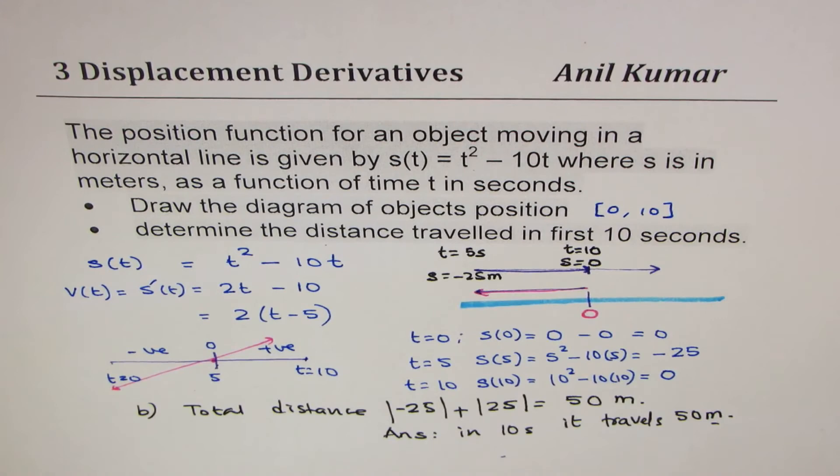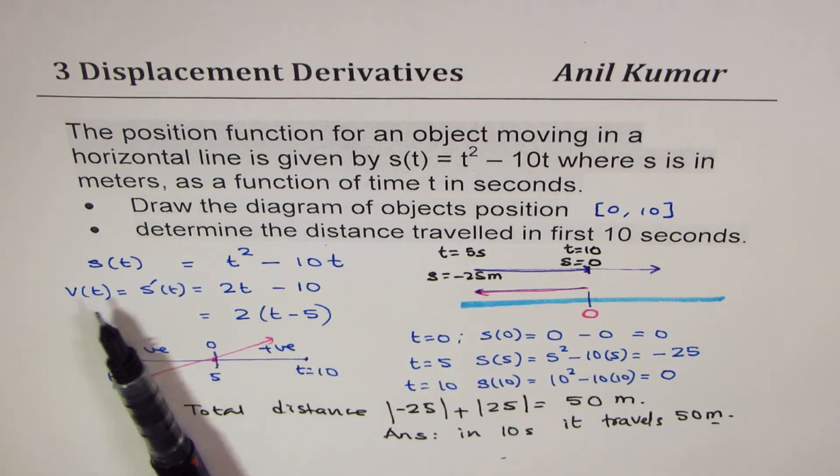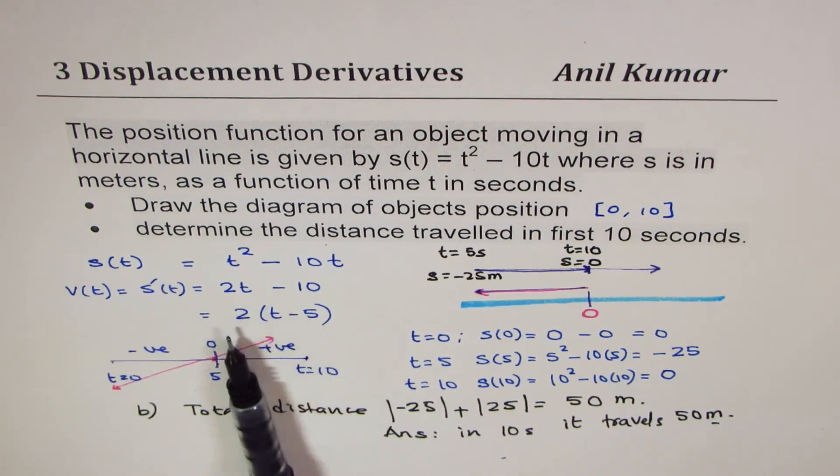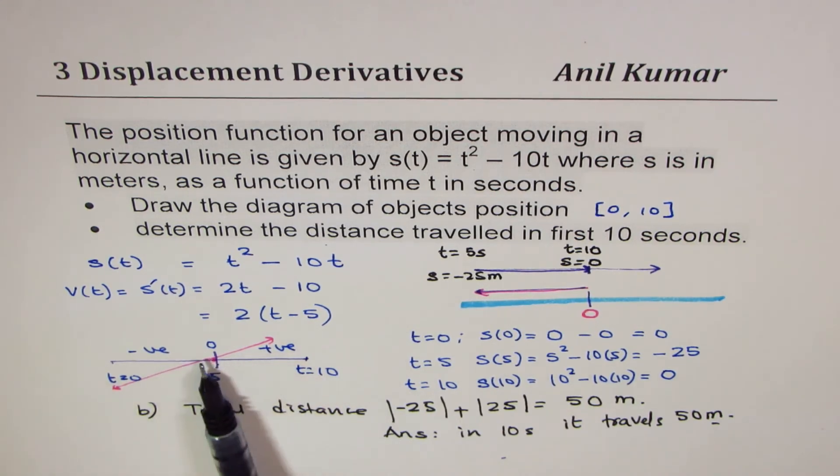So I hope with this you understand why we took the derivative of displacement or position and figured out in which region the object is traveling in negative. Negative means we'll consider going towards west. East is considered positive when we consider horizontal line. And then once we know all that, we can actually draw the diagram as shown here. I hope that helps.